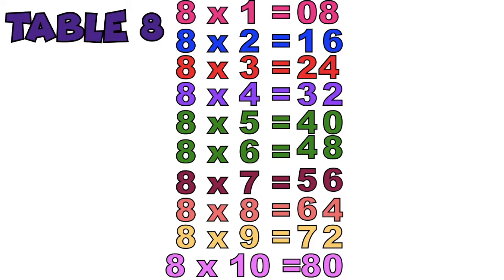8 x 1 equals 8. 8 x 2 equals 16. 8 x 3 equals 24. 8 x 4 equals 32. 8 x 5 equals 40. 8 x 6 equals 48. 8 x 7 equals 56. 8 x 8 equals 64. 8 x 9 equals 72. 8 x 10 equals 80.